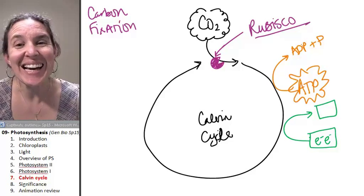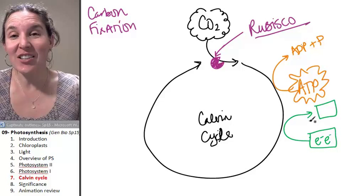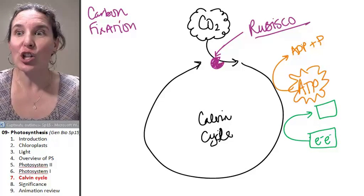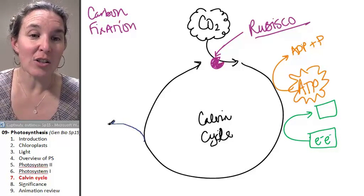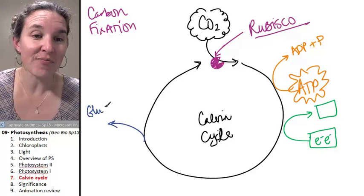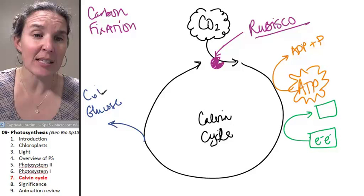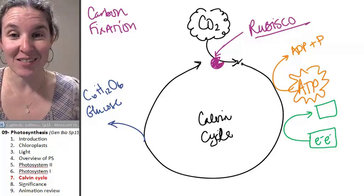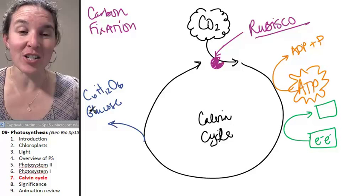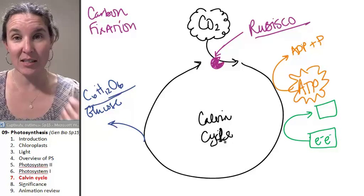Carbon dioxide goes in, ATP goes in, high energy electron carriers go in and glucose, this is where the magic happens. Glucose comes out. Or some sort of sugar. C6H12O6. So Rubisco fixes the carbon. We use up all the stuff that came from the light reactions and out of it we get carbon-based sugar molecules.